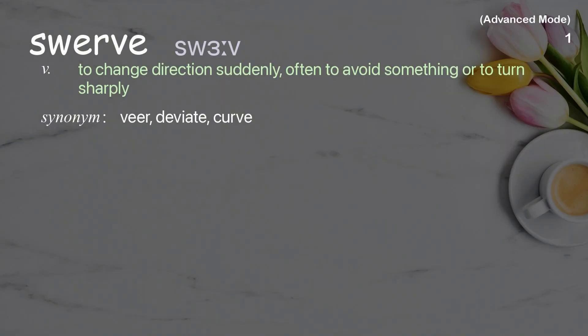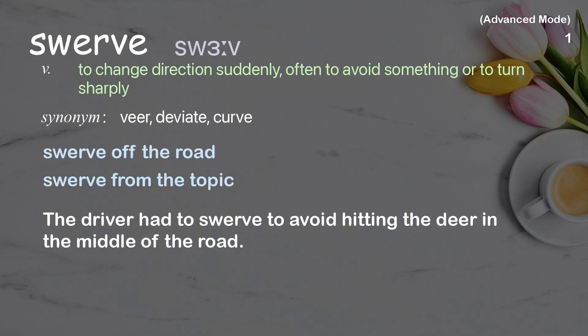Swerve: to change direction suddenly, often to avoid something or to turn sharply. Examples: swerve off the road; swerve from the topic. The driver had to swerve to avoid hitting the deer in the middle of the road.